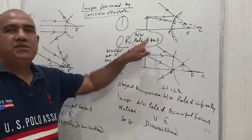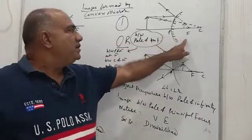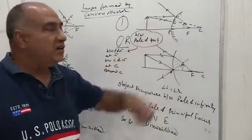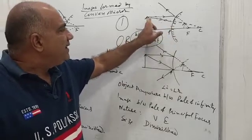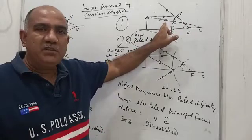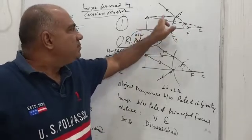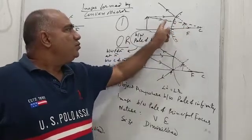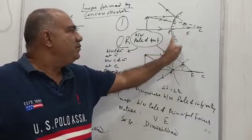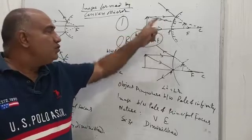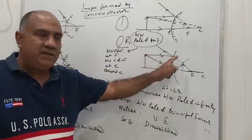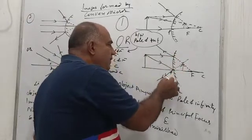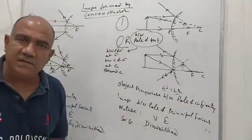The image will be found between the pole and focus, behind the mirror. Light rays do not actually reach behind the mirror — they only appear to meet. The rules used for ray tracing are: first, a light ray approaching the center of curvature is reflected back along the same path; second, a ray parallel to the principal axis will appear to be diverging from the principal focus when produced backward; third, a ray incident obliquely is reflected obliquely such that the angle of incidence equals the angle of reflection.